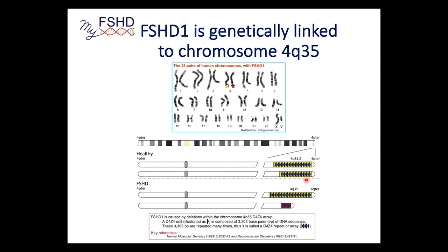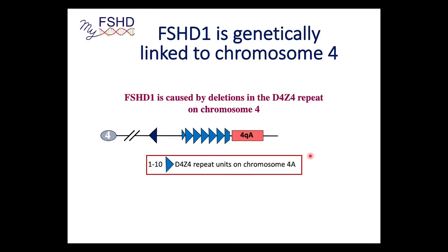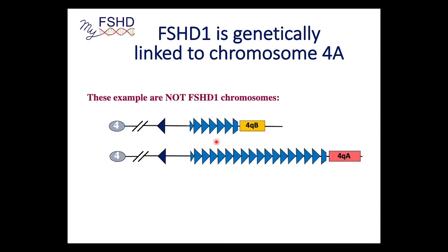Everybody has a D4Z4 repeat array on both chromosome 4s, and in FSHD one of them is smaller. FSHD1 is caused by deletions in the D4Z4 repeat on chromosome 4 — if you have between 1 and 10 D4Z4 repeat units, you are potentially FSHD1. The other required part is the 4qA FSHD1-permissive subtelomere. So when you have 1 to 10 repeats on a chromosome 4qA, that is genetically FSHD1. You can also have this deletion on chromosome 4 without 4qA — it could be 4qB — and this is an FSHD non-permissive allele, so that is not FSHD. This is why the first thing done in FSHD testing should be determining whether you have 4qA or 4qB.